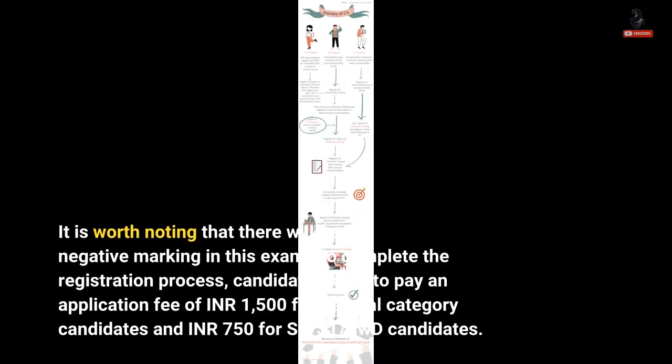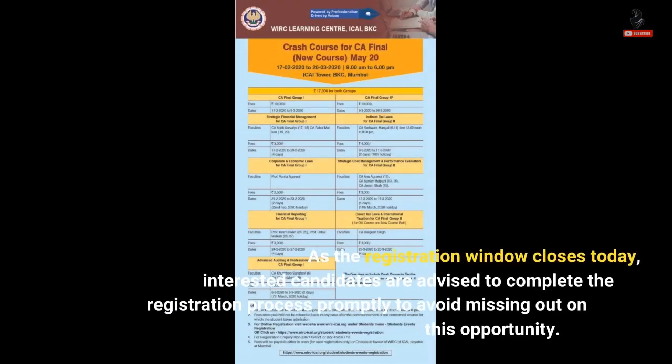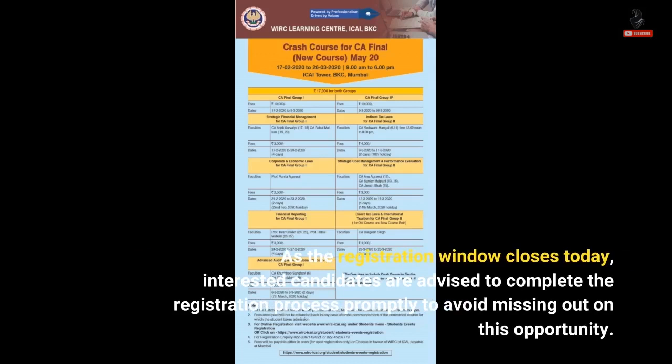To complete the registration process, candidates need to pay an application fee of 1,500 rupees for general category candidates, and 750 rupees for SC/ST/PWD candidates. As the registration window closes today, interested candidates are advised to complete the registration process promptly to avoid missing out on this opportunity.